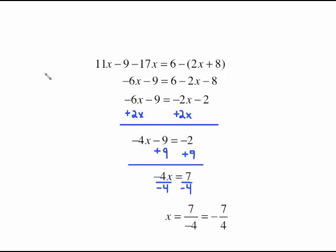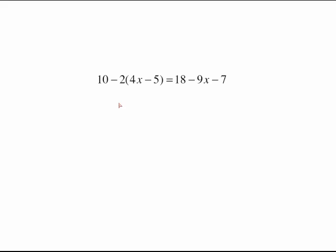A common mistake on a problem like this is for students to do 10 minus 2 is 8 and then distribute the 8 through the parentheses. What you have to remember here is this 2 in front of the parentheses means 2 times. Order of operations tells me I need to multiply before I do any adding and subtracting. So don't fall into that trap where you put those together. Get the distributing done first. So on the left side I distributed negative 2 times 4 gives me negative 8x. Negative 2 times negative 5 gives me positive 10.